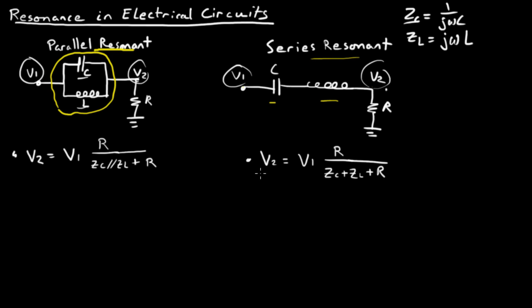Here in the series resonant case, we have a very similar example, where we have V2 equals V1 times R, this R, here's the L, over the sum of these impedances, ZC plus ZL plus ZR.